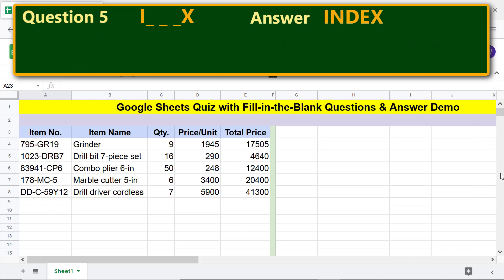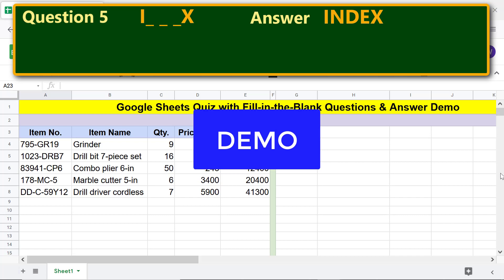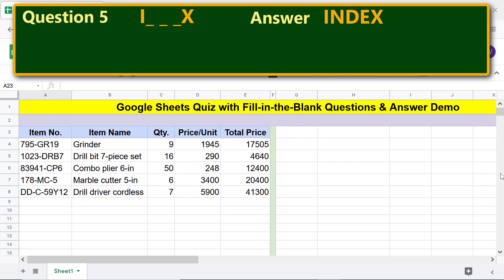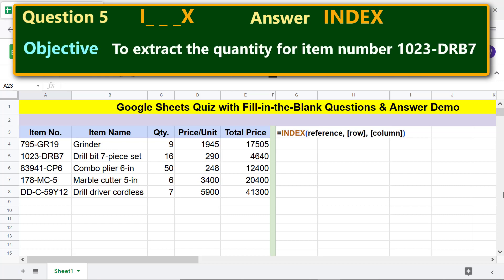Demo: here is the index function formula. The objective is to extract the quantity for item number 1023-DRB7. I will type the formula specifying the reference and row and column offset.